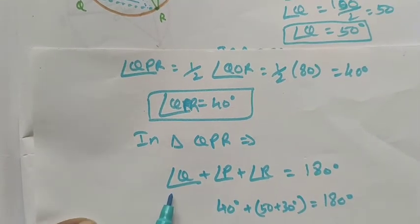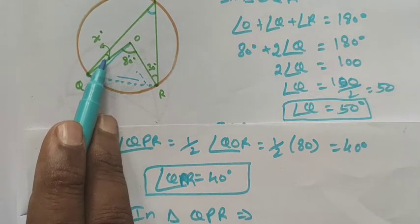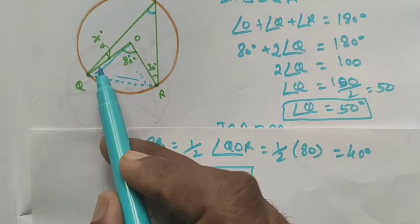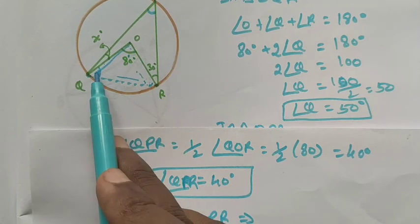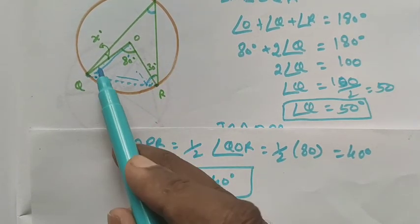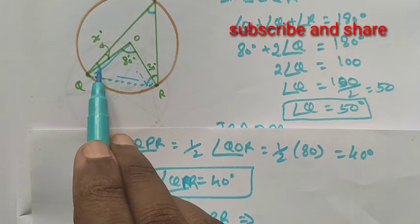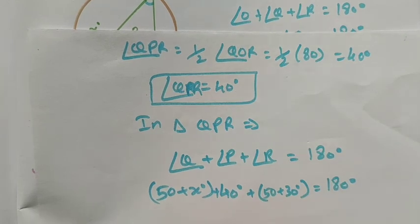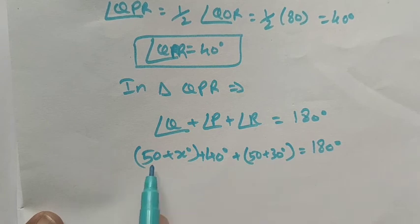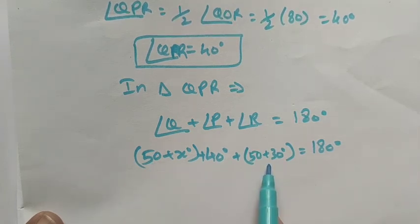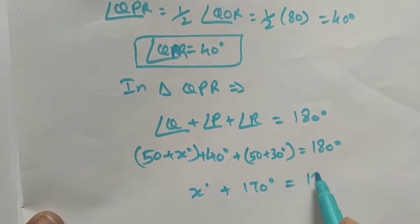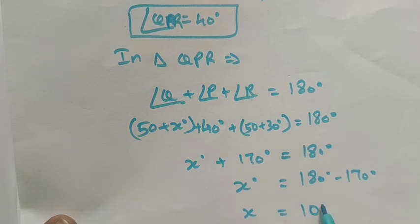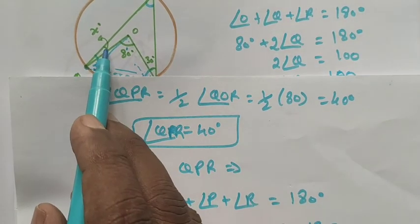So this angle is Q, which is 50. This is 50 plus x. So 50 plus x plus 40 plus 50 plus 30 equals 180 degrees. Therefore x plus 170 equals 180 degrees. Then x equals 180 minus 170, so x equals 10 degrees. So the answer for roman numeral II is x equals 10 degrees. Thank you, students.